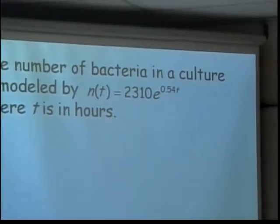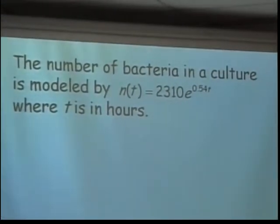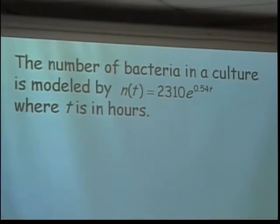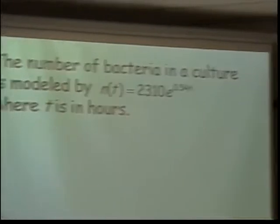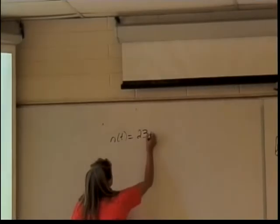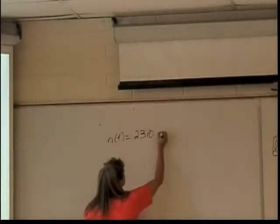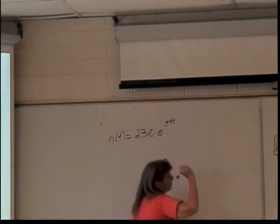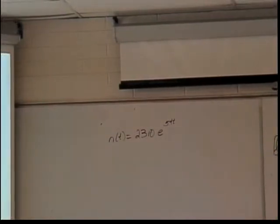The culture is modeled by this equation: n of t equals 2310 times e to the 0.54t, where t is in hours. Okay, so here's our formula. You're saying, what am I supposed to solve? Nothing yet. So the number of bacteria is equal to 2310 times e to the 0.54t. That's our function.